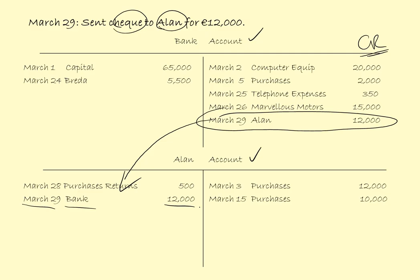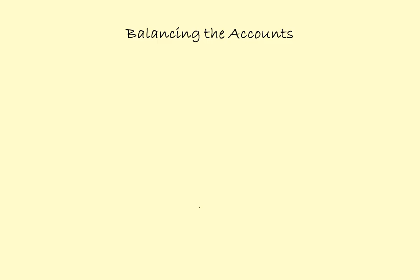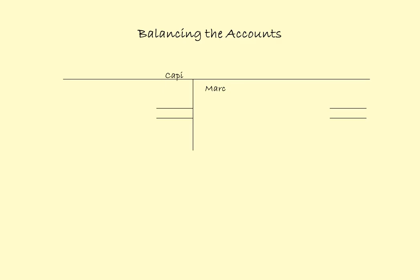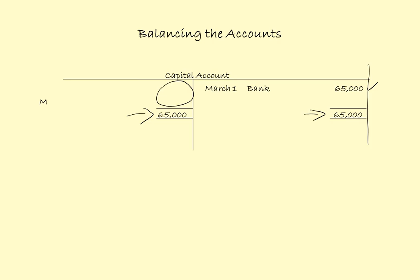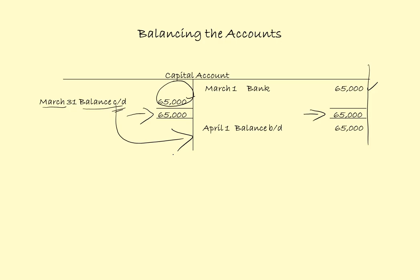That completes all the entries in the ledger accounts for the month of March. What we are now going to do is balance off the accounts — going down to the accounts one by one and balancing each account in turn, even if there is only one transaction in the account. Starting off with the capital account: there is only one transaction of 65,000. I put 65,000 as the total for both columns. The balancing figure is 65,000 — March the 31st, balance carried down 65,000 — and that is brought down onto the credit side for the 1st of April.